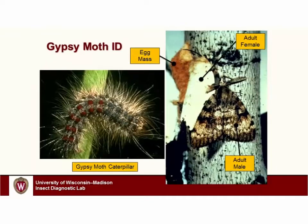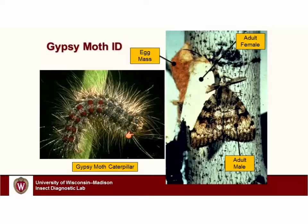How do we identify gypsy moth? The easiest life stage to identify — and the one that does the damage — are the caterpillars. When mature, they can get up to about two inches long. They are grayish and very fuzzy in appearance, and they have a series of nodules on the body — physical bumps that stick up. They've got a bunch of red ones, and some blue ones up towards the head.